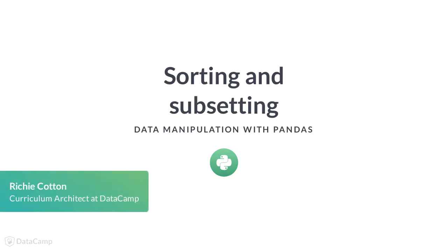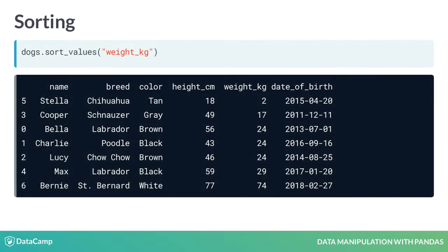In this video, we'll cover the two simplest and possibly most important ways to find interesting parts of your data frame. The first thing you can do is change the order of the rows by sorting them, so that the most interesting data is at the top of the data frame.